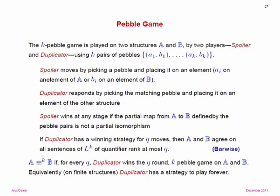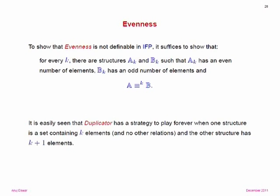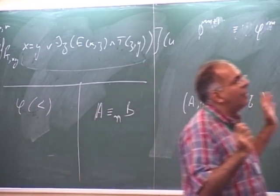At any stage of the game, if the map on pebbled points is not a partial isomorphism, Spoiler has won. If Duplicator has a strategy for surviving for q moves, the two structures A and B agree on all sentences of L^k with quantifier rank at most q — and the number of variables and quantifier rank are independent parameters. If for every q, Duplicator has a winning strategy for the q-round k-pebble game, then we say A and B are k-equivalent. For finite structures, this is equivalent to Duplicator having a strategy for playing forever.